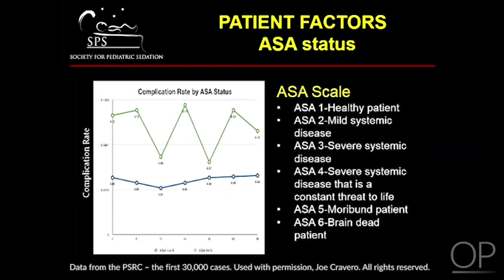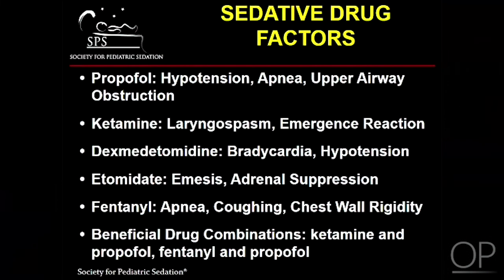It is important to be familiar with the ASA classification scale and evaluate patients before sedation using its principles. We next consider the potential effects of medications — sedative drug factors. This list includes a number of common sedation drugs and the most common adverse effects associated with them. Compared to other regimens, propofol most often results in hypotension, apnea, and upper airway obstruction. Ketamine has been more closely associated with laryngospasm and emergence reactions. Dexmedetomidine can cause bradycardia and hypotension. Etomidate can cause emesis and, in multiple doses, can result in significant adrenal suppression.